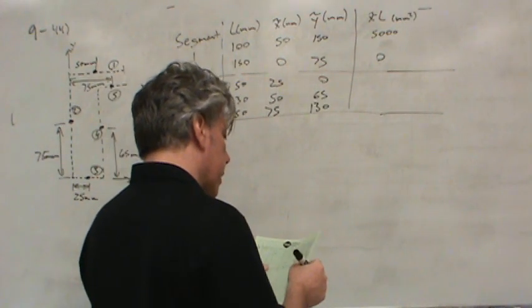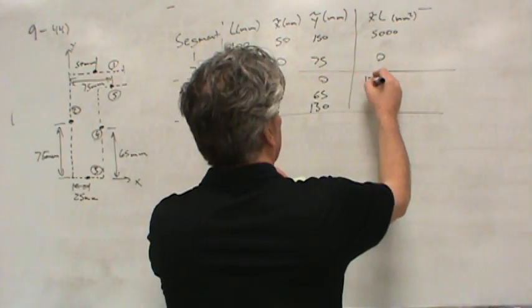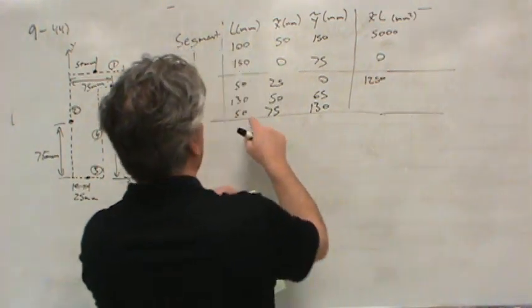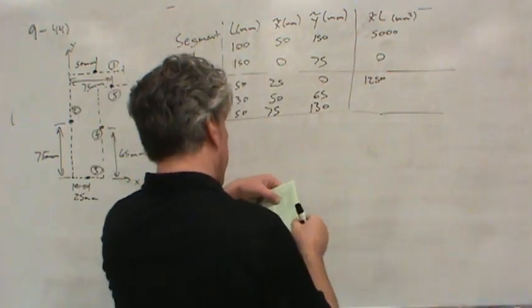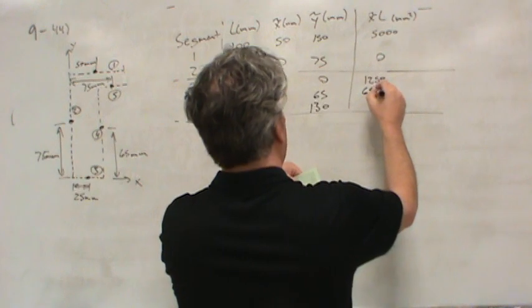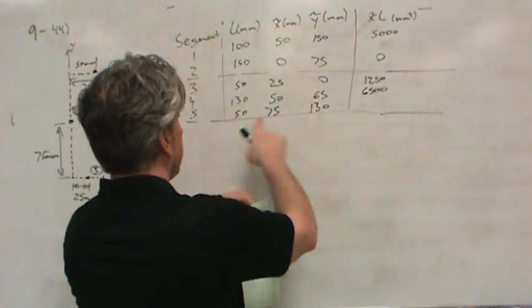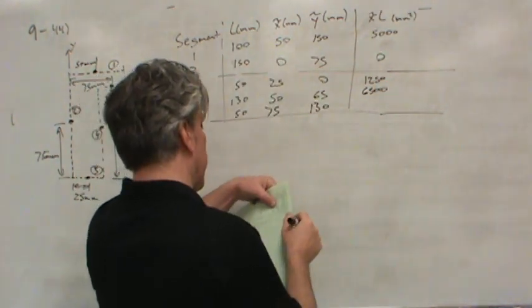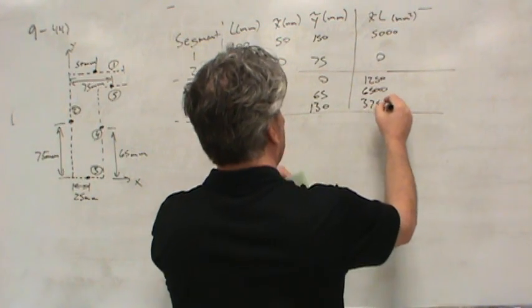150 times zero, that's easy, that's zero. 50 times 25, well I could do it, but it's early, I might get it wrong, so let me just copy, because I've already done this work. 1,250, 130 times 65, apparently 6,500, and then 50 times 75, 3,750.